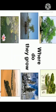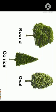Every living thing needs a home. A plant is a living thing. It needs air, water, soil and sunlight to live. The place that a plant lives in is called a habitat. There are many different types of habitat that make a home for plants.